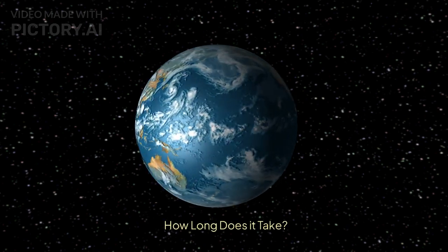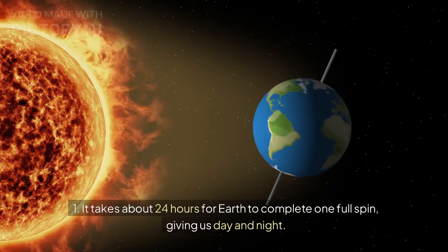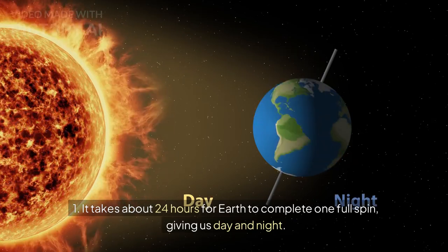How long does it take? It takes about 24 hours for Earth to complete one full spin, giving us day and night.